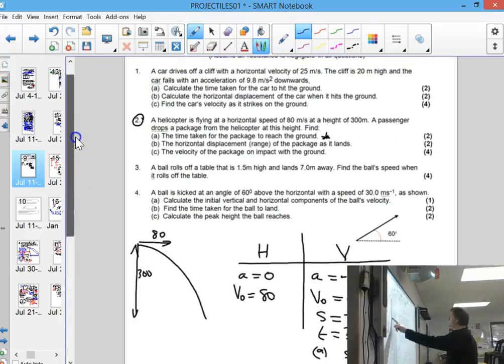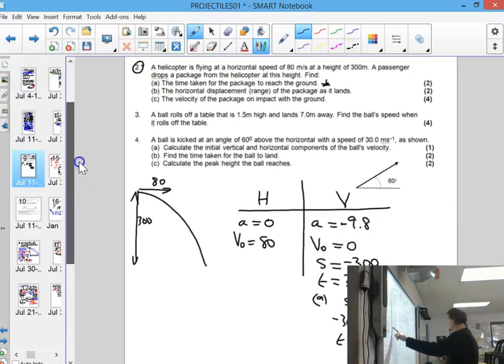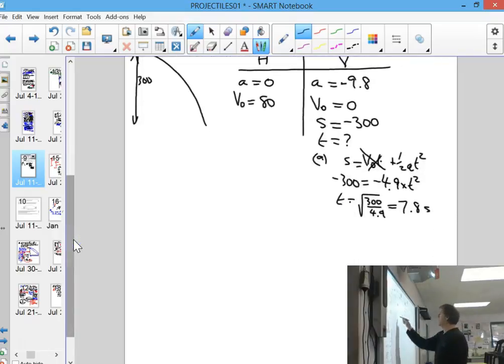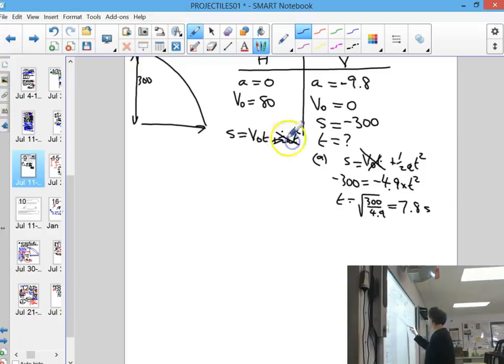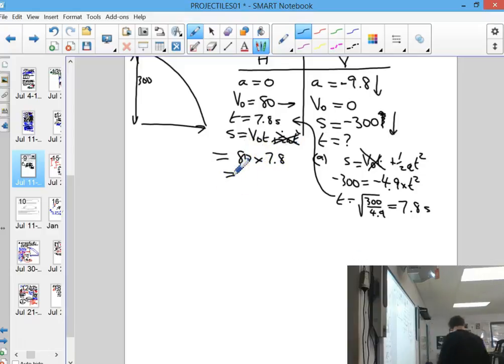Part b says find the horizontal displacement, the range of the package, to show how far away does it land. So we'll do the horizontal motion here and use that formula. You can forget the half at squared now because a is always zero here. And this time is the one thing you can transfer between the different columns. So we've got 80 meters per second times by 7.8. The actual range of travel is 626 meters.